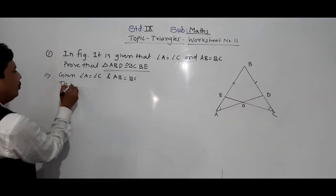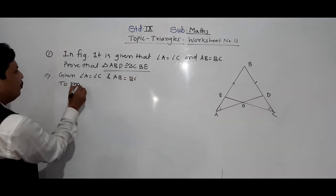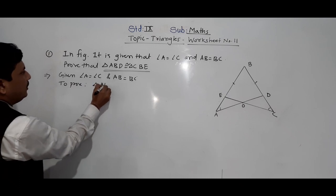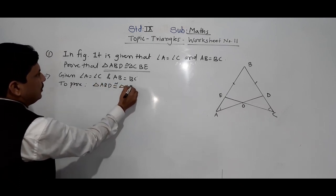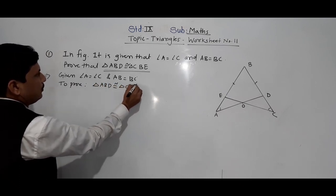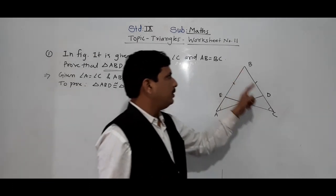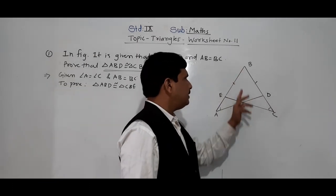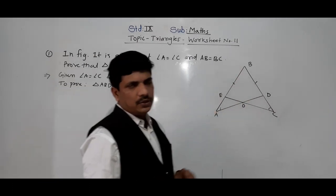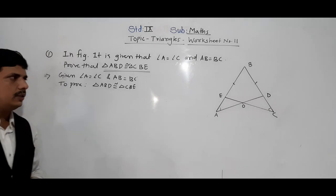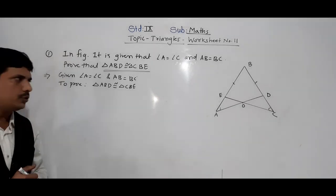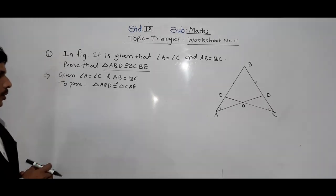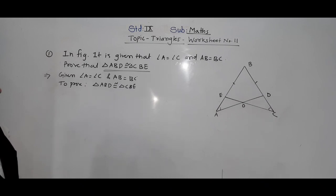We have to prove that triangle ABD is congruent to triangle CBE. These two triangles are what we are going to prove congruent. First, we need to think about how to approach this, so we will consider triangle AOE and triangle COD.